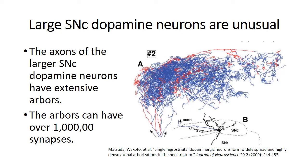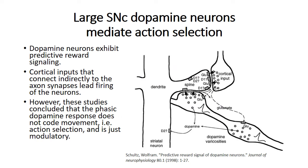These large arbors are well configured to mediate action selection. It has been accepted for some time that the SNC dopamine neurons exhibit what is called predictive reward signaling — they are activated by cortical signals from cognitive processing that identify rewarding events that are better than predicted, remain uninfluenced by events that are as good as predicted, and are depressed by events that are worse than predicted. These cortical signals are not received at the dendrites of the dopamine neurons; they are received at striatal dendrites, where glutamate release from the cortical signals causes dopamine to be released from the dopamine neurons. This is very unusual.